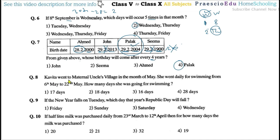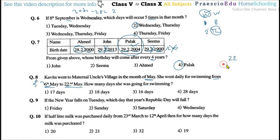Question number eight: Kavita went for swimming from 6th May to 22nd May. How many days did she go for swimming? Since 6th is included, the previous day is 5th. So 22 minus 5 equals 17 days. Option number one, 17 days, is correct.